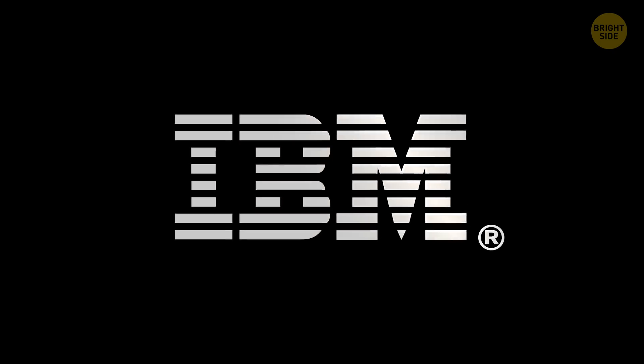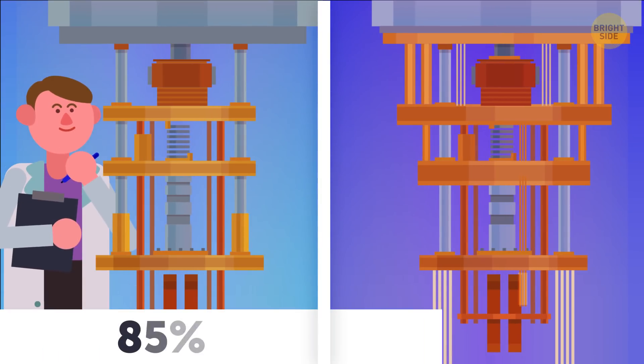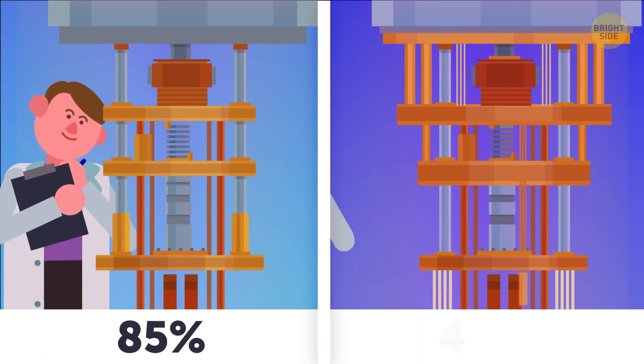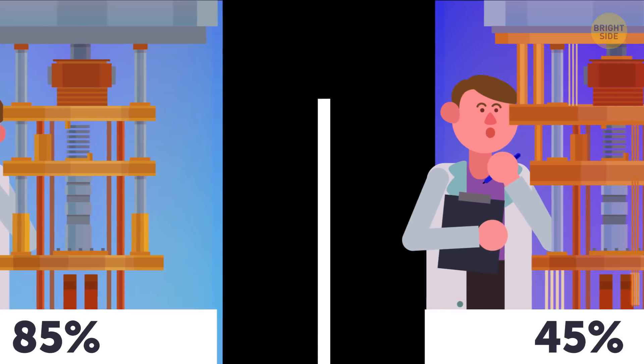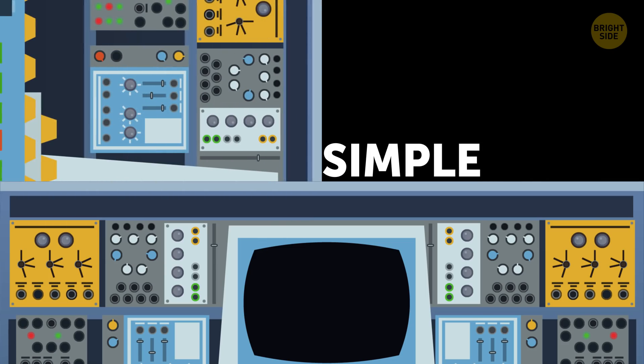For this purpose, they used an IBM quantum computer and innumerable attempts, 85% of which were successful in a simple system, and only 45% in a system that's a bit more complicated. But simple isn't exactly the right word here. Nothing can be simple if you're talking about quantum computers and quantum physics in general.